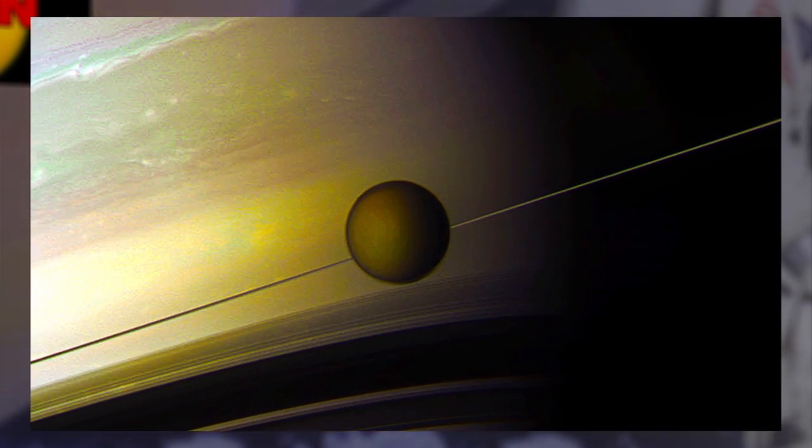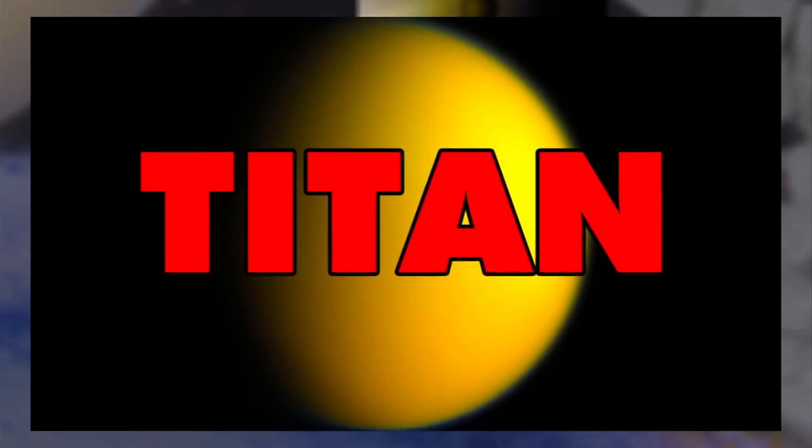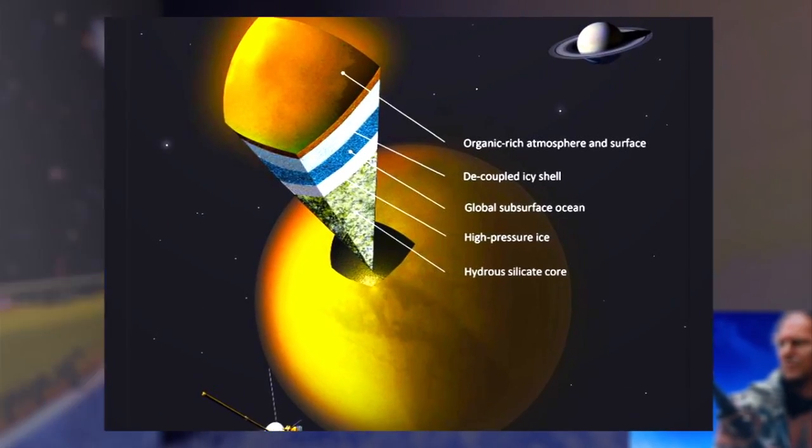NASA scientists now believe Saturn's giant moon, aptly named Titan, may have a vast ocean under its frozen skin.